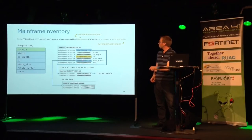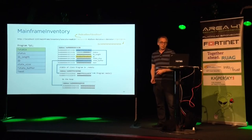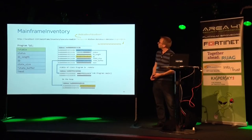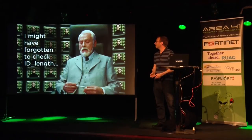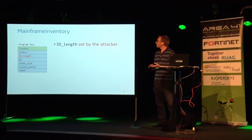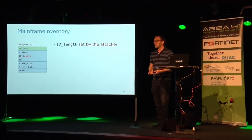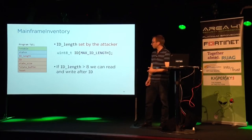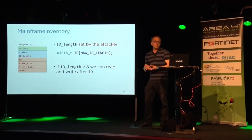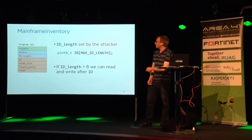There is also a pointer to state buffers — more data which we can control as a client. But you might think this looks fishy: why can we set the ID length? The programmer forgot to check ID length. As an attacker, we have control over the length of the ID field, which indicates the number of bytes in the ID buffer, which has a fixed size of 8 in this example.